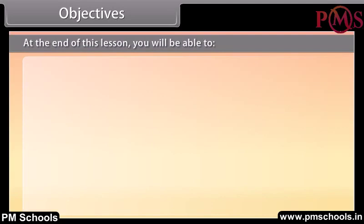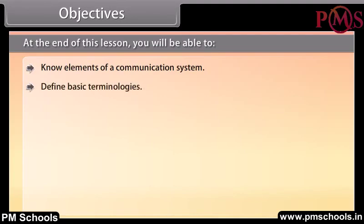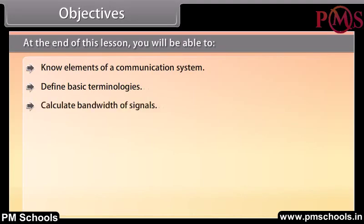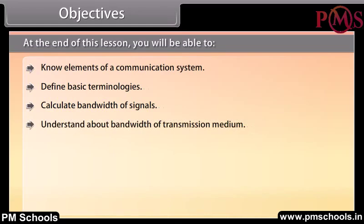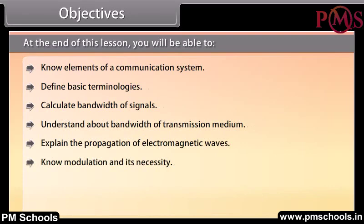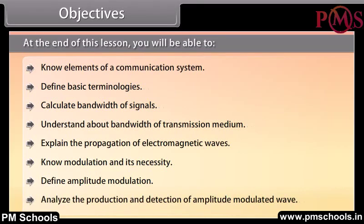Objectives: At the end of this lesson, you will be able to know the elements of a communication system, define basic terminologies, calculate bandwidths of signals, understand bandwidth of transmission medium, explain the propagation of electromagnetic waves, know modulation and its necessity, define amplitude modulation, and analyze the production and detection of an amplitude modulated wave.